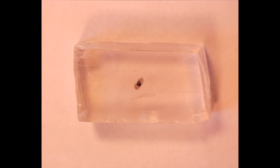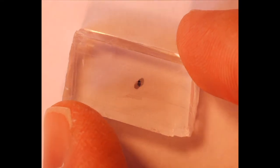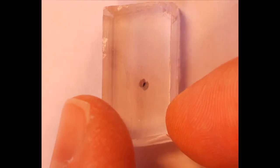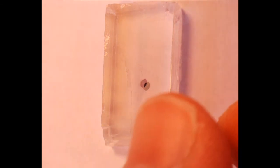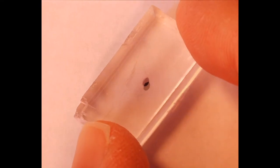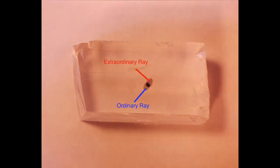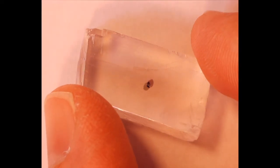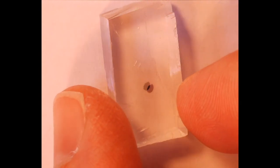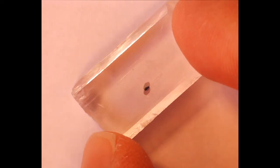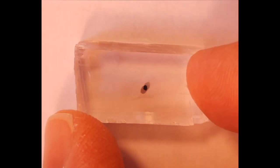Looking at the dot through the calcite produces two images of the dot. As light enters the anisotropic calcite it is actually being split into two beams. As we rotate the crystal, one of the images seems to stay in place while the other rotates about it. The image that stays in place is called the ordinary ray, and the image rotating about it is called the extraordinary ray. The difference in refractive indices with direction in calcite is rather extreme, which makes it ideal for this experiment.